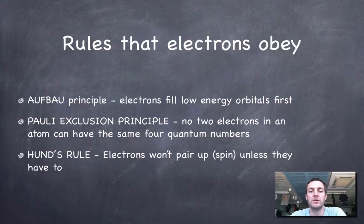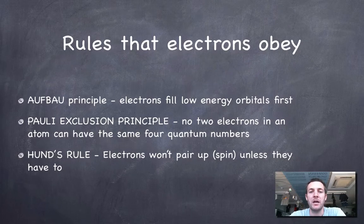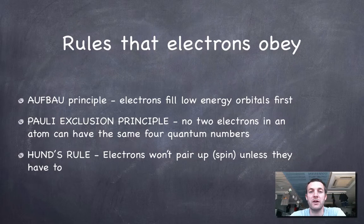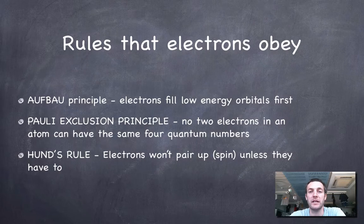Okay, here are the rules that electrons obey. The Aufbau principle first of all says that if I start giving an atom electrons, those electrons will first of all go into the lowest energy orbitals that they can.